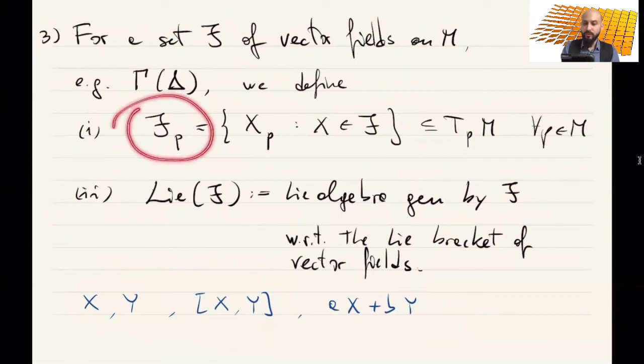So it's the smallest subset of all the vector fields that contains F and is closed under linear combinations and Lie bracket. So these two notions are important to give the formal definition of what is bracket generating tangent sub-bundle.